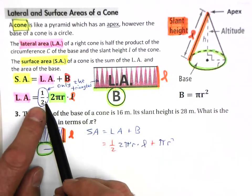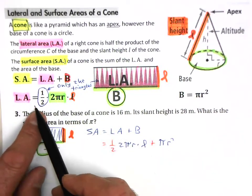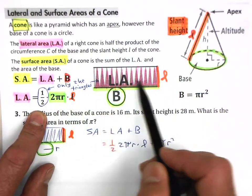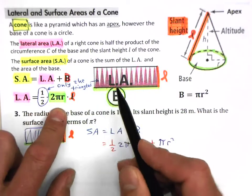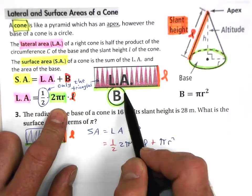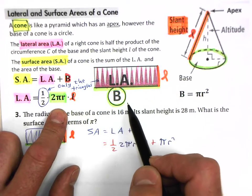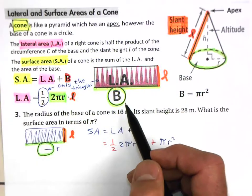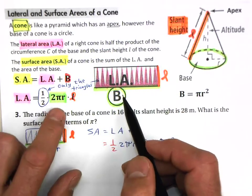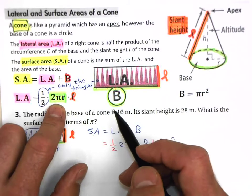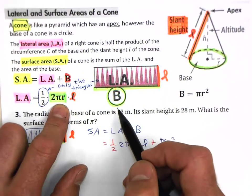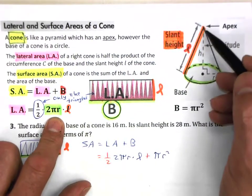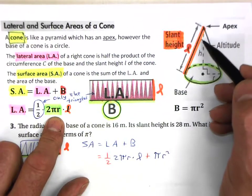And for our lateral area, we only want half of this rectangle because we only want the triangles in there. And this length of the rectangle, you remember, just like with a cylinder, is the perimeter around a circle. Perimeter around a circle is called a circumference. And the equation for circumference is 2 pi r. And this little height of your rectangle is your slant height of the cone. So that's pretty simple.